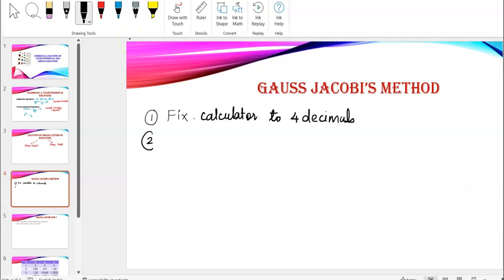Second thing, if you're doing sums based on sine, cosine, tan, etc., unless it is not mentioned, set your calculator in radian mode.